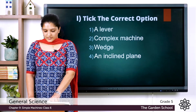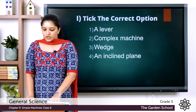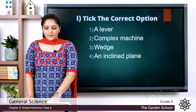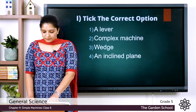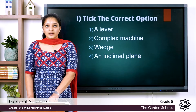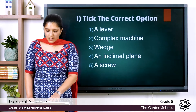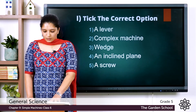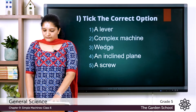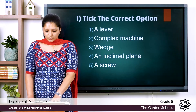The fifth question: a simple machine that can be used to fix two pieces of wood together is — the options are a screw, a pulley, a wheel and axle, and inclined plane. The answer is a screw. A simple machine that can be used to fix two pieces of wood together is a screw.